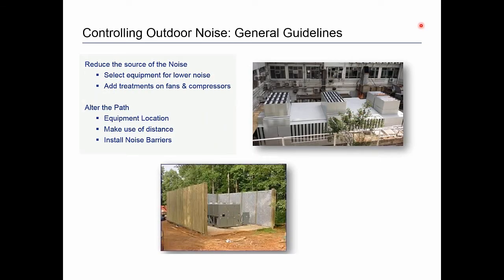To control outdoor noise from your units, you have the same two choices as anywhere in noise control: reduce the source by selecting inherently quieter equipment or adding treatments to fans and compressors, or alter the path of the sound. You can change the equipment's location, make use of distance — remember, sound decays with distance — and most commonly, install noise barriers around the unit. Barriers can be very effective, but they have to be planned and executed correctly, and they're not always as cost-effective per dollar spent as you might hope.